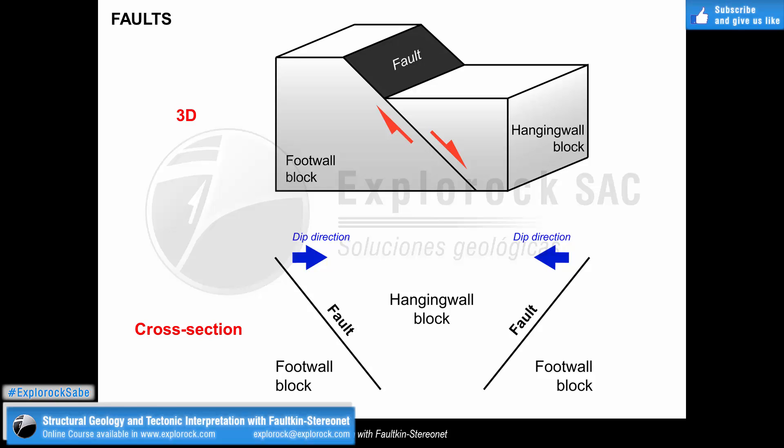In cross section, the hanging wall may be bounded by two faults whose inclinations are towards the same direction, where such blocks experience either an ascendant or descendant movement with respect to the foot wall. The kind of movement will depend on several factors which will be taken up in subsequent modules.